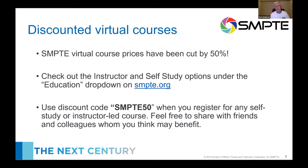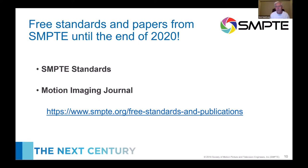There are also virtual courses — these cost money, but right now SMPTE has reduced the price by 50%. You can use the SMPTE50 discount code. Additionally, standards, papers, and the journal are free until the end of the year. You can find that with the free standards and publications link on the website.